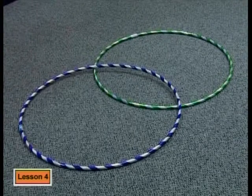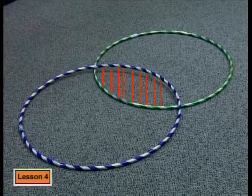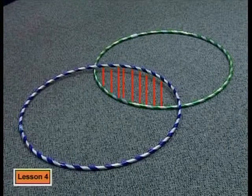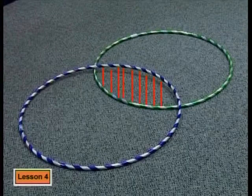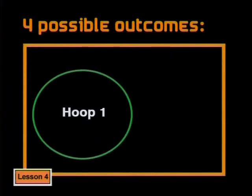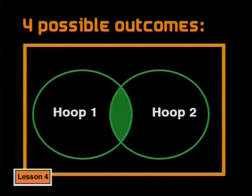If these two hula hoops overlap like this, the bean bag could land in the overlapping part. How can we describe where the bean bag has landed? It's inside hoop one, but it's also inside hoop two. The overlapping circles are called the intersecting subsets, and we draw them exactly the way you see them here. Here's the room — our sample space, the set of all possible outcomes. One possible outcome is landing inside the first hoop; another is landing inside the second hoop. But in this example the two circles are intersecting, so the bean bag could also land inside both circles in the intersecting area.